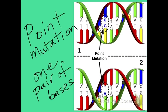A point mutation occurs in one base or pair of bases. Here you can see that the G and C are substituted for a T and A, so the organism may see an effect in the protein when this change is made. This is called a point mutation — one place.